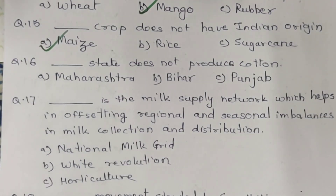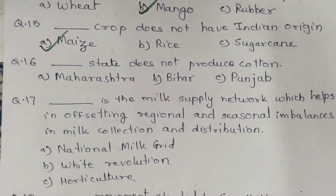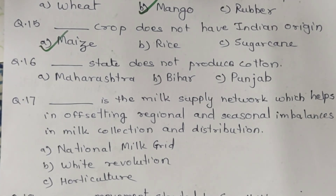Question 15. Which crop does not have Indian origin? A. Maize. B. Rice. C. Sugarcane. And the correct answer is A. Maize.